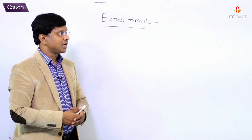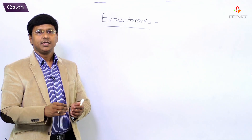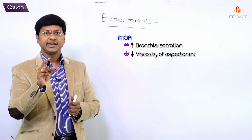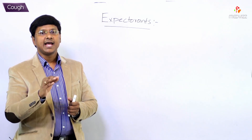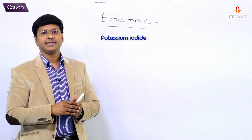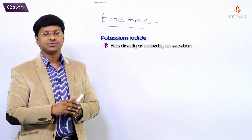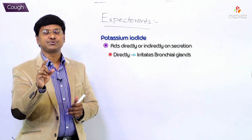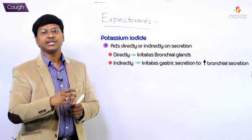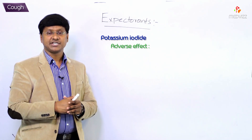Now let me discuss the expectorants. These agents increase the bronchial secretions or reduce the viscosity of the expectoration. Potassium iodide acts both directly and indirectly on the secretions — directly by irritating the bronchial glands.